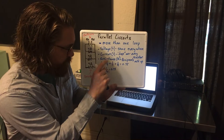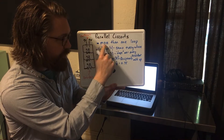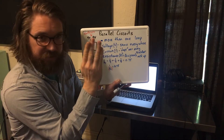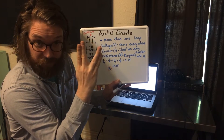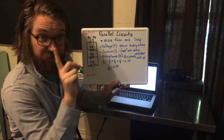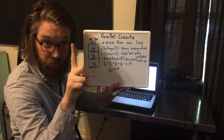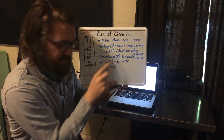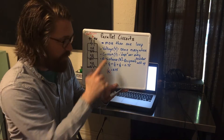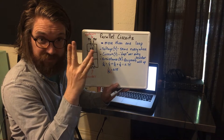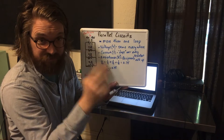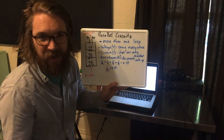Here's my trick for remembering this: a parallel circuit is more than one loop, which means the wire splits — it 'V's. V is the same everywhere in a parallel circuit. In a series circuit there is only one loop, and that looks like an 'I' for one big loop. So: parallel — voltage is the same everywhere because they split. Series — current is the same everywhere because an I looks like a one.